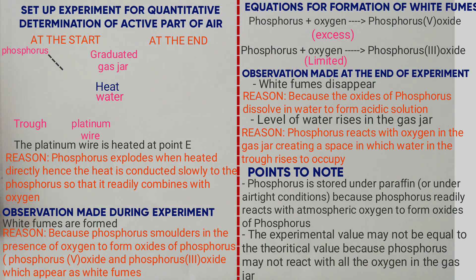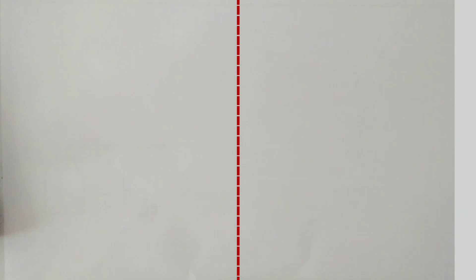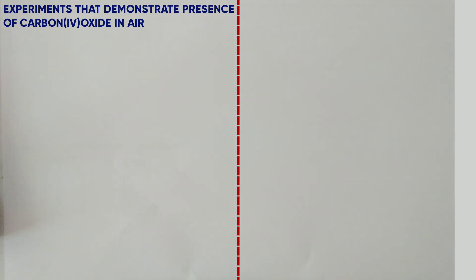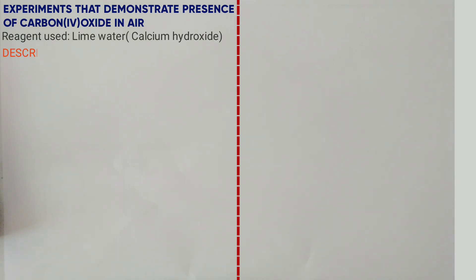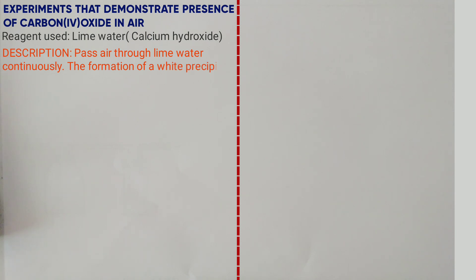Next we look at the experiment that demonstrates the presence of carbon dioxide and water vapor in air. The first is the experiment demonstrating the presence of carbon dioxide in air. The reagent used is lime water — chemical name calcium hydroxide. The description: pass air through lime water (calcium hydroxide) continuously. The formation of a white precipitate indicates the presence of carbon dioxide in air.